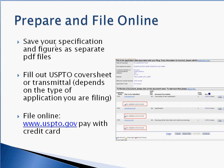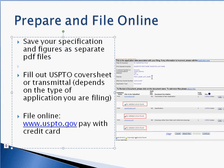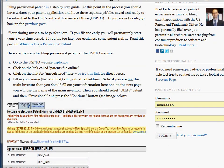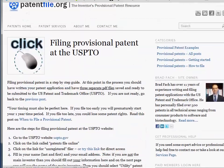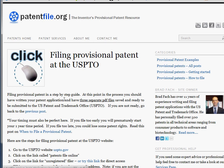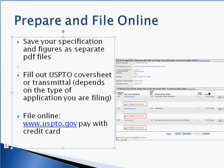Once you have your specification and your figures created, you'd want to save them as PDF files, because that's the acceptable file type for the patent office website. You would fill out the proper cover sheets or transmittal letters to file your patent, and you'd ultimately go online to the USPTO.gov website and you can pay your filing fee with your credit card. On my website patentfile.org, I actually walk you through the entire steps to do this and I have screenshots. Once you submit your patent application, you should get a patent serial number, and at that point you can use the term patent pending to describe your new software.